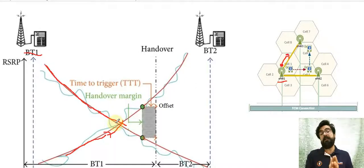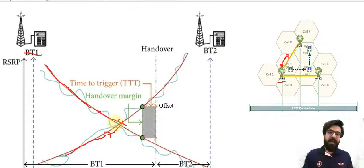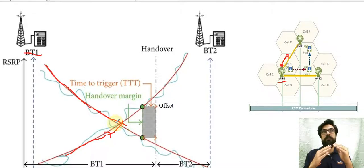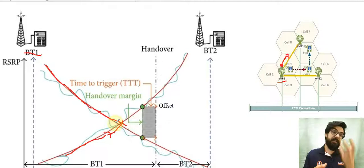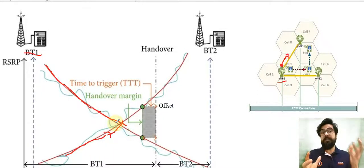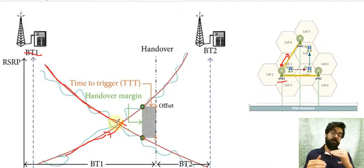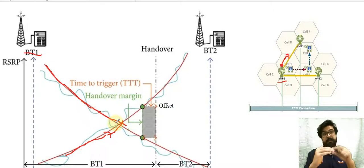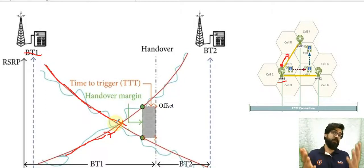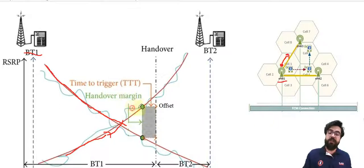Somehow it causes confusion among engineers and students. Imagine you're at the border, at the place where the two lines cross each other. Maybe you decide to go further, maybe you decide to go back. And if you have handover at that specific place, you may go back and forth, resulting in lots of handovers in the system, adding lots of load to the eNodeBs and the MMEs. So from that point, there is a specific number we call the offset. When the UE passes that threshold plus that offset, it goes through handover. We call that the handover margin, and it's the trigger point.